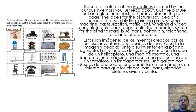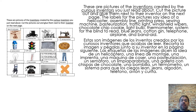These are pictures of the inventions created by curious inventors you just read about. Cut the pictures out and glue them next to their inventor on the next page. The labels for the pictures say: idea of a helicopter, assembly line, printing press, sewing machine, pasteurization, traffic light, windshield wipers, chocolate chip cookie, light bulb, thermometer, system for the blind to read, blue jeans, cotton gin, telephone, airplane, and band-aid.